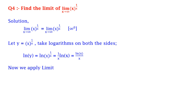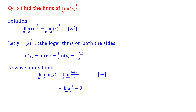Now we apply the limit. Therefore, limit x tends to infinity of ln y equals limit x tends to infinity of ln x upon x, which is again infinity upon infinity. So we apply L'Hôpital's rule, which gives us limit x tends to infinity of 1/x, which equals 0. Remember, we got the limit of ln y but we want y. Hence, limit x tends to infinity of y equals e raised to 0, which is equal to 1.